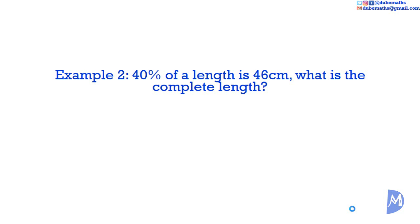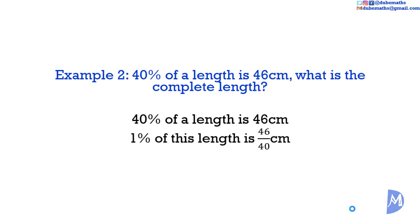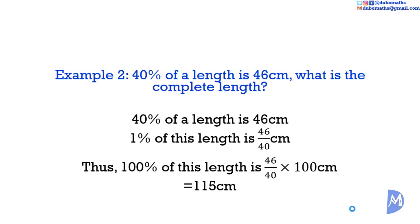My intention is not to scare you but I always use the unitary method. 40% of a length is 46cm. 1% would be 46 divided by 40cm. Thus 100% of the length is 46 divided by 40 multiplied by 100cm. It is equal to 115cm.